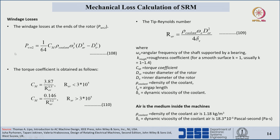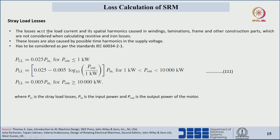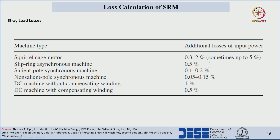Based on the Reynolds number, the windage losses at the end of the rotor can be calculated. Stray load losses are losses from load current and its spatial harmonics in the windings, laminations, frame, etc. — the remaining losses not covered by windage, copper, or core losses. As a percentage: for induction motors approximately 0.32%, for salient pole synchronous machines 0.12%, and for switched reluctance machines the range is 0.1 to 0.2%.